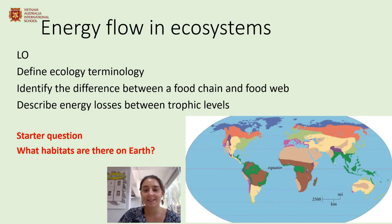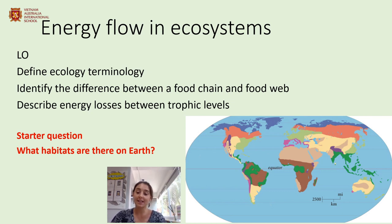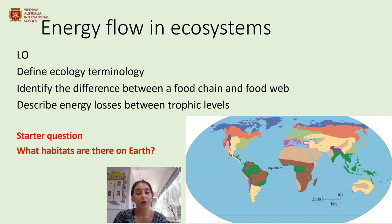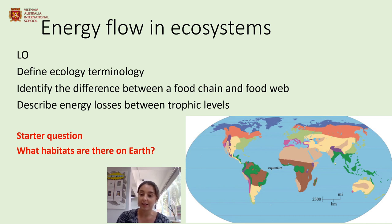Hello and welcome to the GCSE lesson in biology. Today we're going to be talking about organisms in their environment. The first lesson is going to be about energy flow in ecosystems. The learning objectives we're going to be covering today are the ecology terminology — all the key words and definitions associated with this topic — the difference between food chains and food webs, and the energy losses between trophic levels, which are the feeding levels.